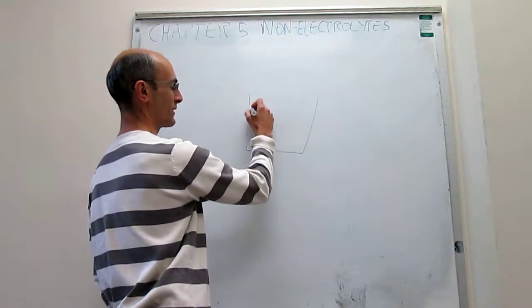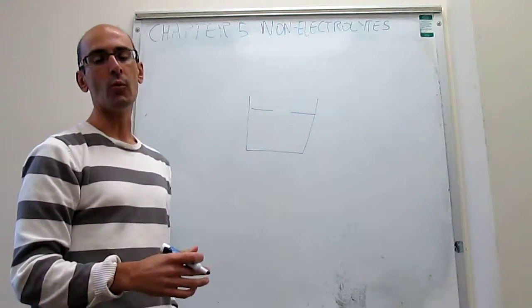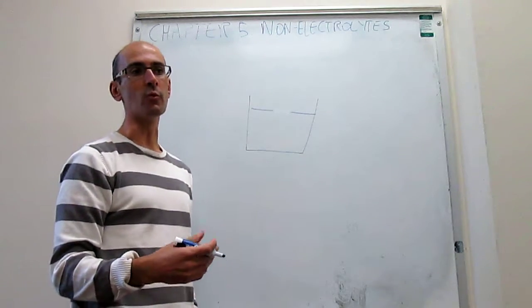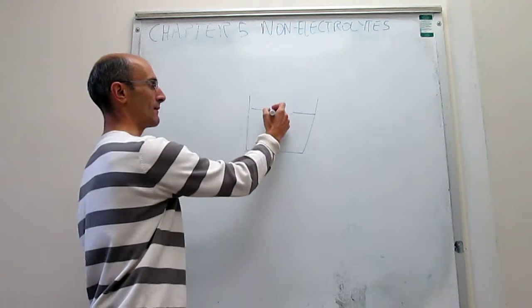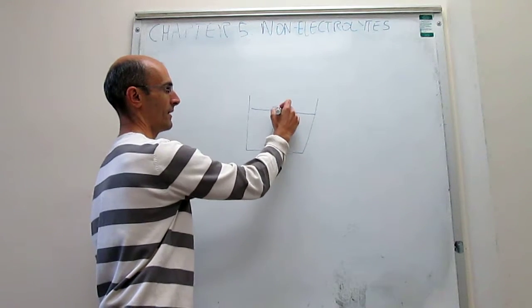Especially in the last chapter, when we looked at physical equilibrium, the type of systems we were interested in were pure substances in which we were studying phase stability. For example, think about water: ice, liquid water, and solid water.